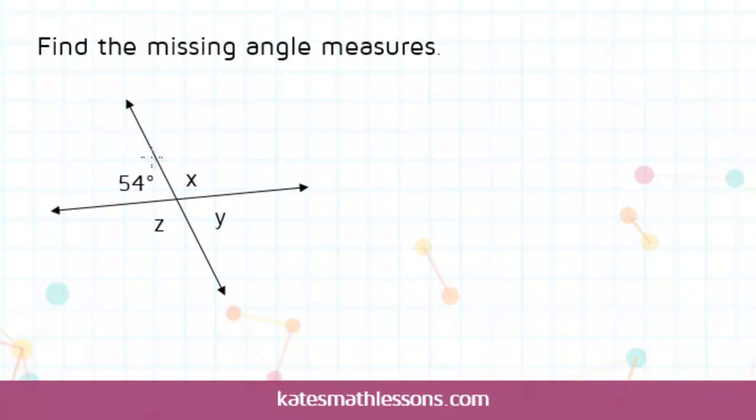In this problem we've been given two intersecting lines that have formed four different angles. We've been given one of them and we need to find the other three. There's a couple different ways to find the missing angles.